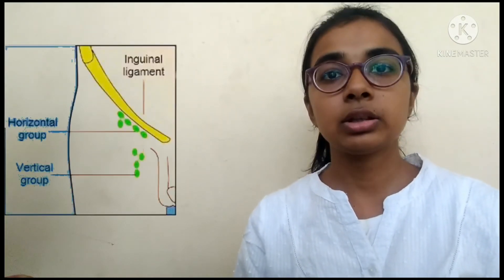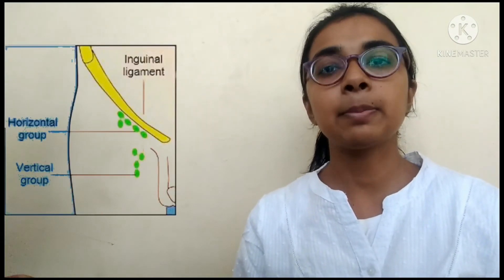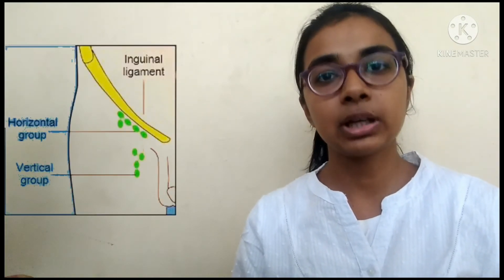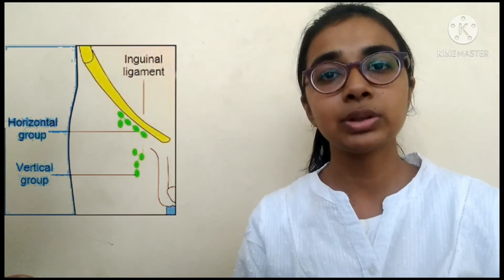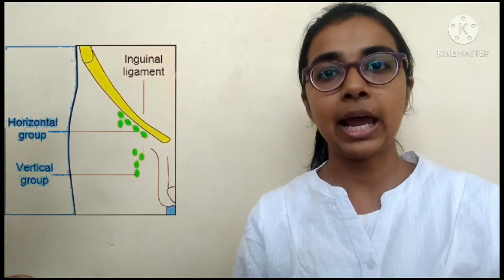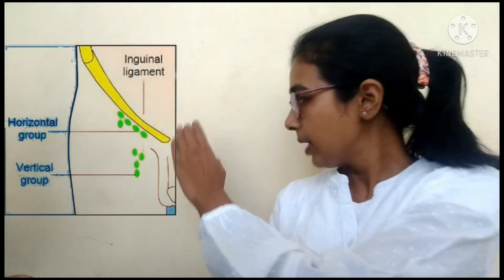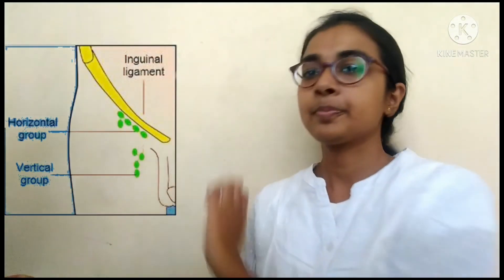Then we will move to the abdomen. For the abdomen, we will palpate the inguinal nodes. We must palpate the superficial inguinal nodes — both the horizontal and vertical groups — which are located here.